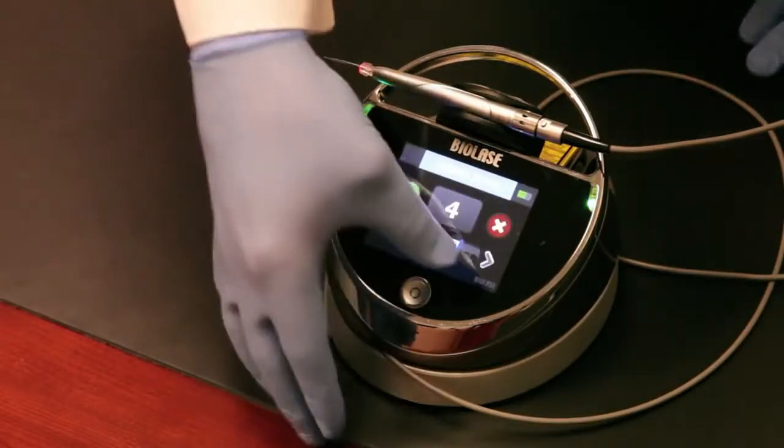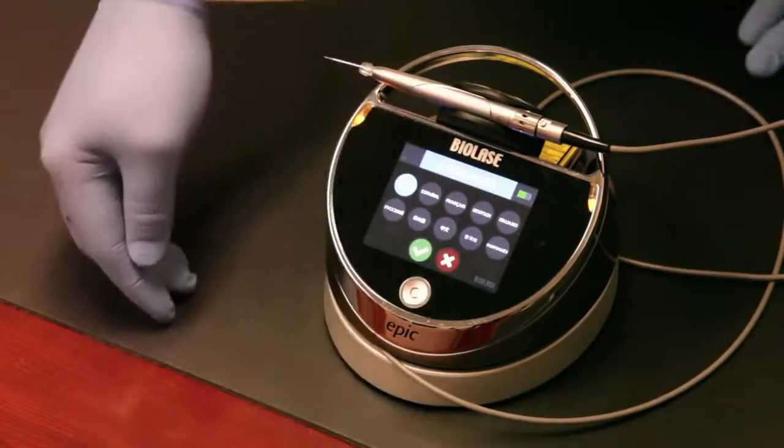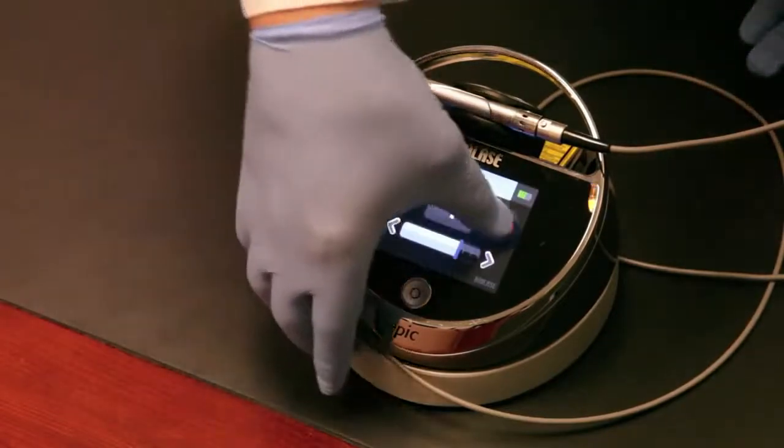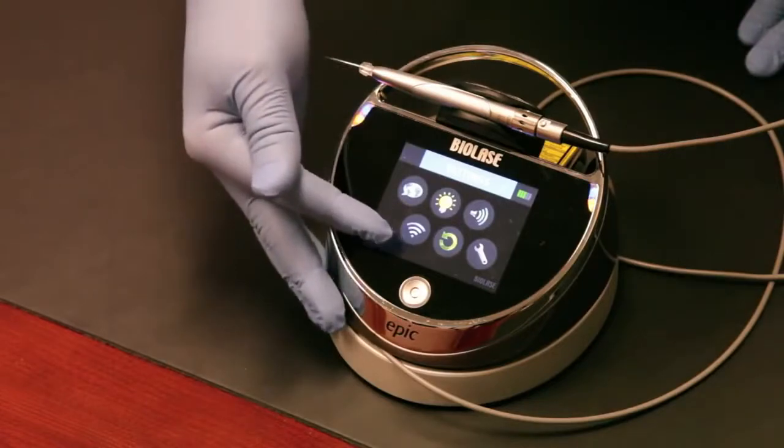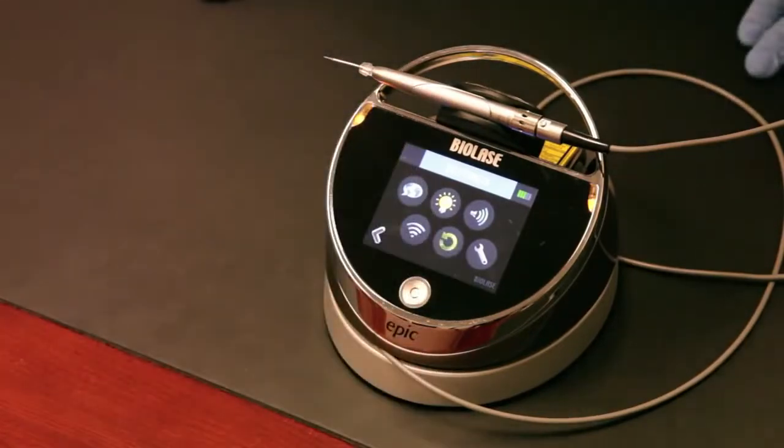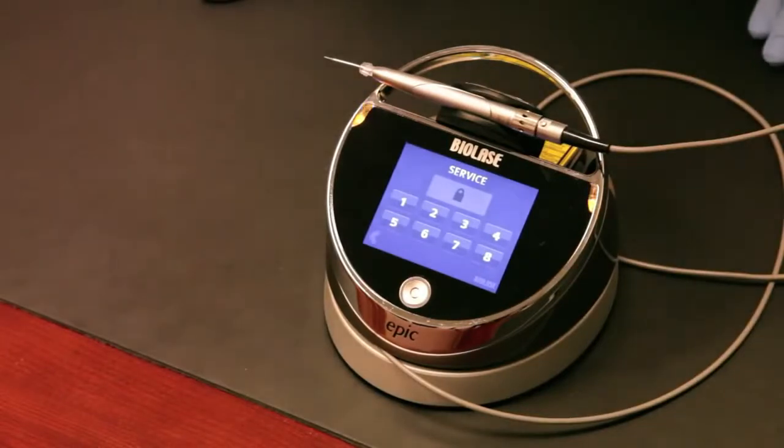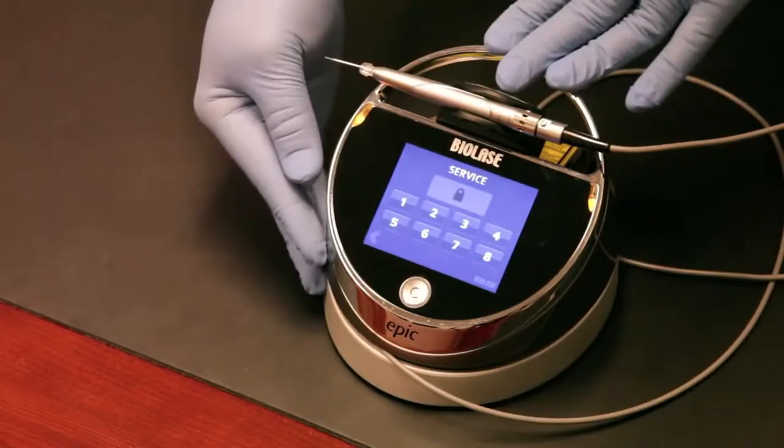You can adjust the aiming beam brightness, adjust the language that you're using. You can see all the preloaded languages there. You can also adjust the volume of the unit itself. Then there's a couple of other settings related to the wireless Bluetooth foot pedal and of course a screen that our service technicians can get to if they need to perform laser service on your Epic. That's buttonology, that's how the laser works from the user interface perspective.